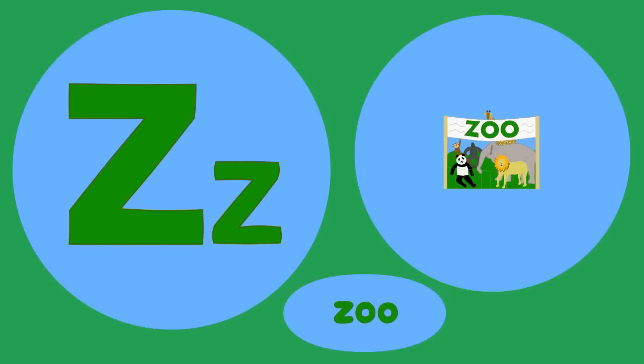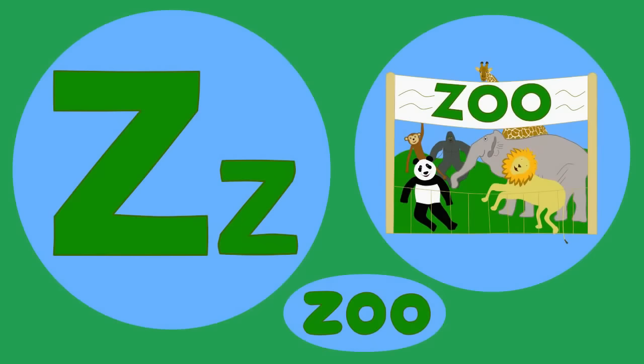Y is for yellow, y-y-yellow. Z is for zoo, z-z-zoo.